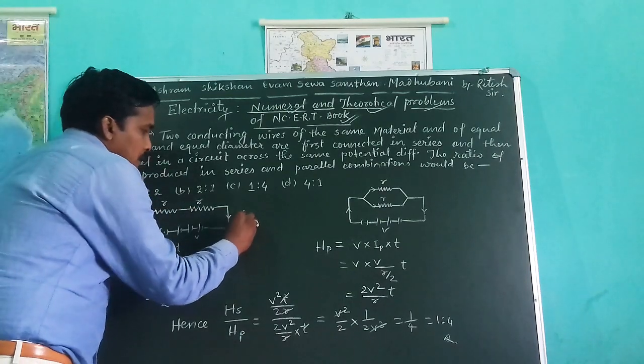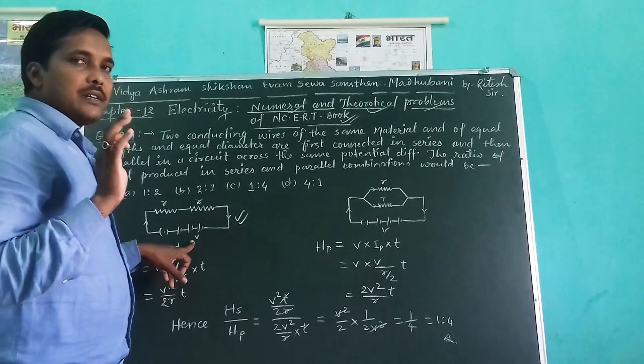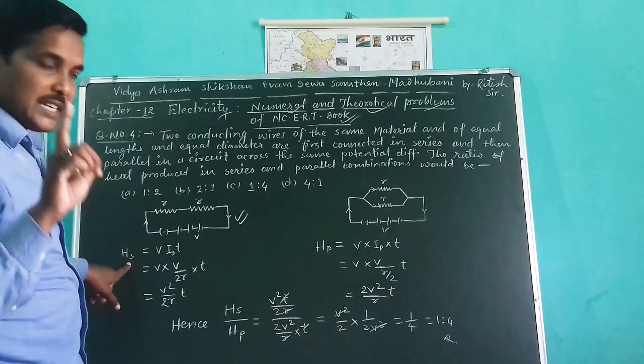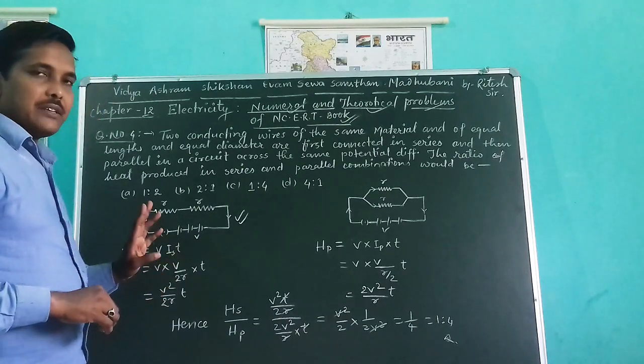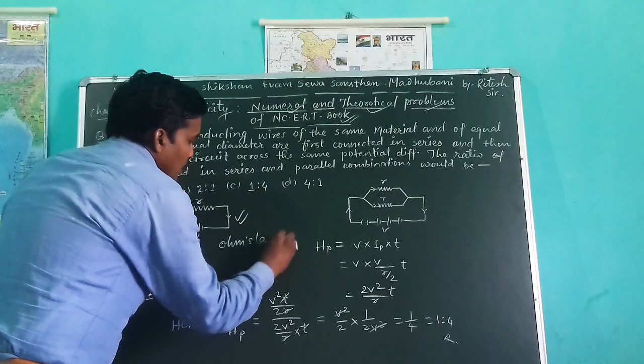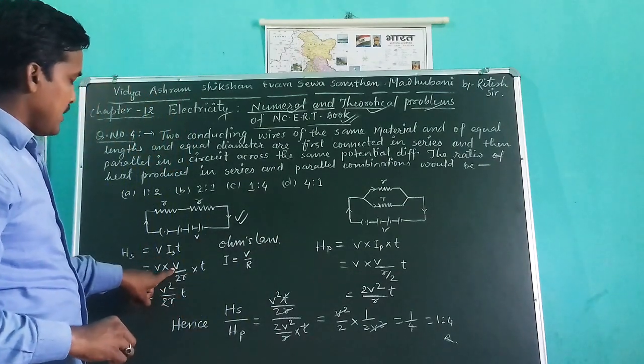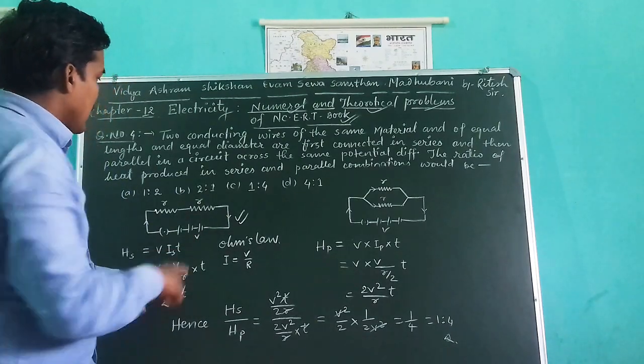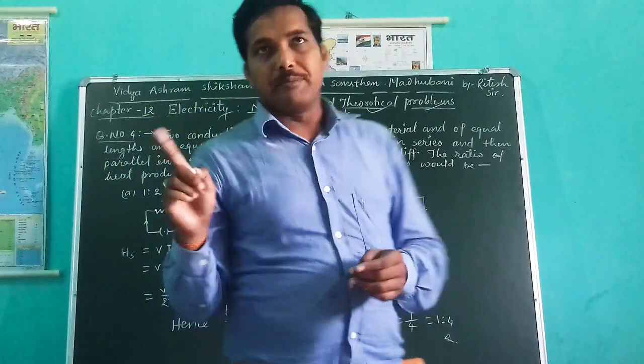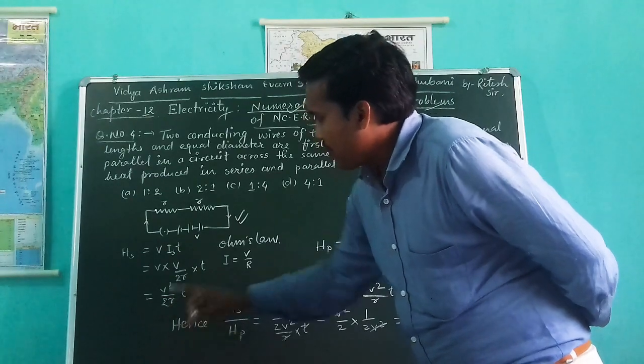Let us start with the first case when these resistors are connected in series wise and potential drop is default. Heat in series combination, that is represented by HS. Keep in mind, HS is equal to VIT. V, that is V, I according to Ohm's law. I is equal to V upon R. So I have put here V times V upon voltage of the entire circuit, and the resistance of the entire circuit R plus R. In series, you know that to get the equivalent resistance, we have to add both of them. R plus R means 2R. So we have finally V²T upon 2R.